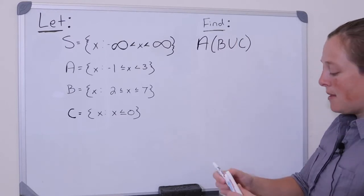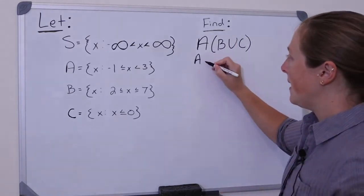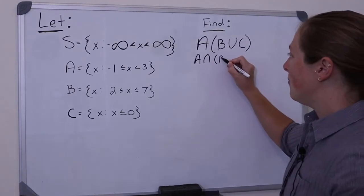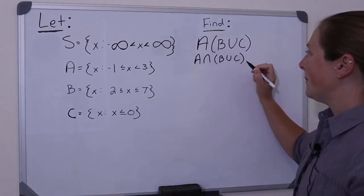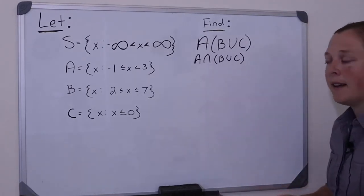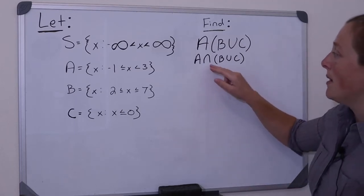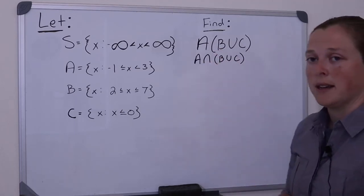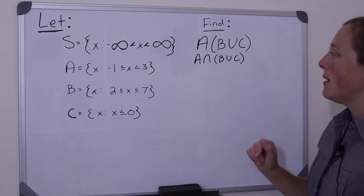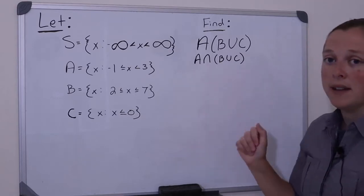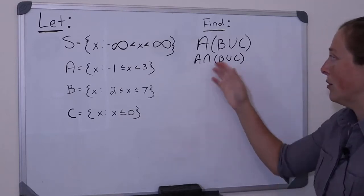So this is the same thing as writing A intersection B union C. You'll often find that statisticians will omit the intersection sign. It's assumed to be there when you have events that you're listing out.